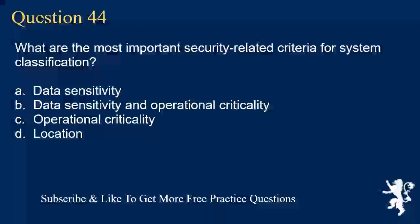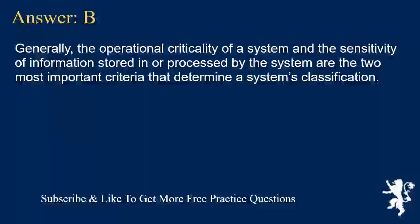Question 44. What are the most important security-related criteria for system classification? A. Data sensitivity. B. Data sensitivity and operational criticality. C. Operational criticality. D. Location. Answer B. Generally, the operational criticality of a system and the sensitivity of information stored in or processed by the system are the two most important criteria that determine a system's classification.